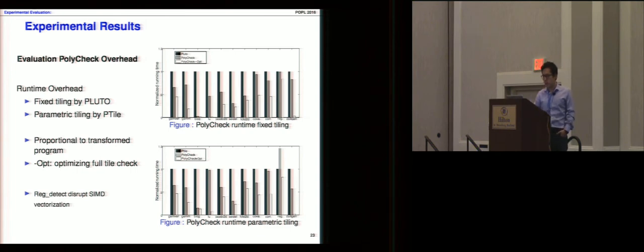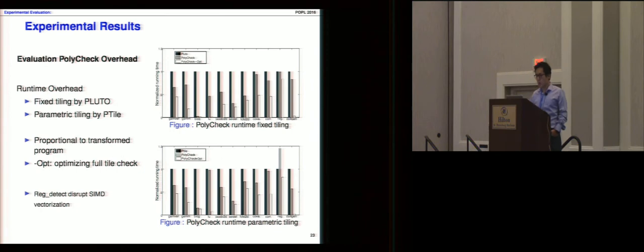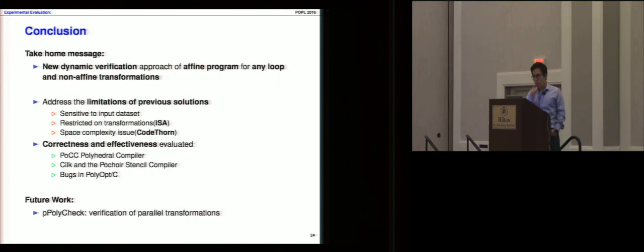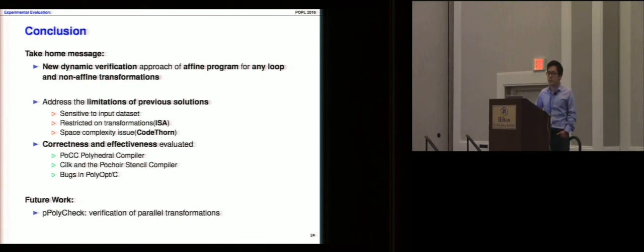In the overhead results, the black columns show transformed code execution time normalized to one, the gray columns show Polycheck without optimization, and the white columns show Polycheck with full-tile optimization. Our Polycheck runtime overhead is much lower than the transformed program. In conclusion, our approach is a new dynamic verification method for affine programs handling any loop and non-affine transformations. We address the limitations of previous approaches, evaluated correctness and effectiveness across different compilers, and also found an existing bug in Polyopsy. Future work could involve verification of parallel transformations.